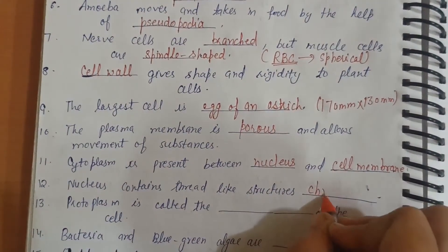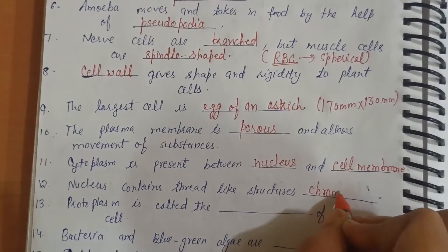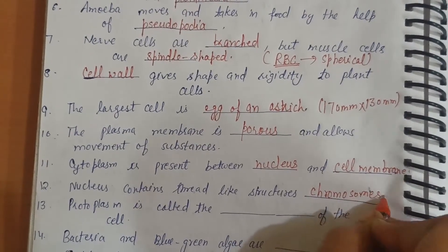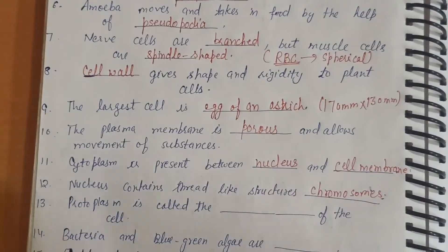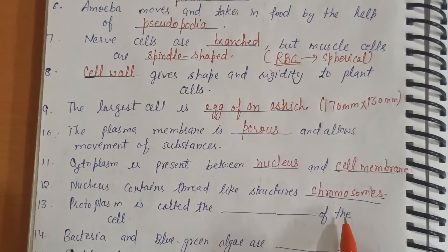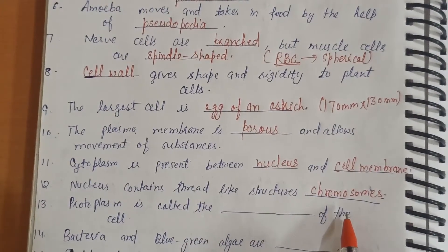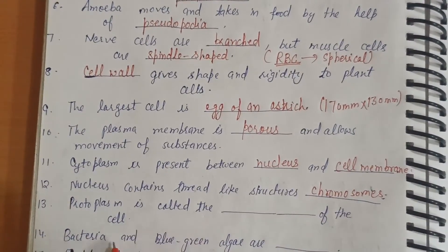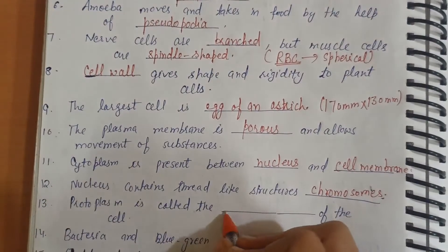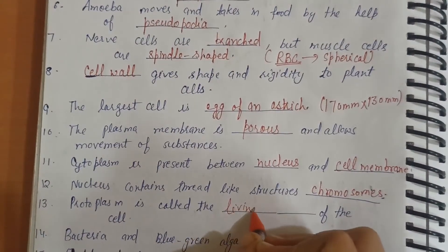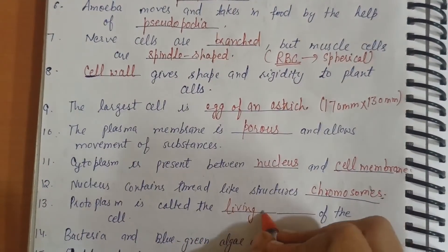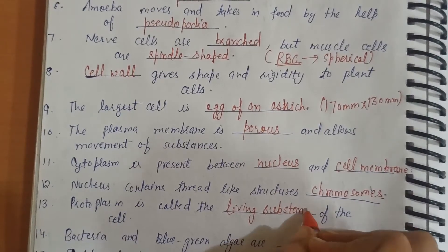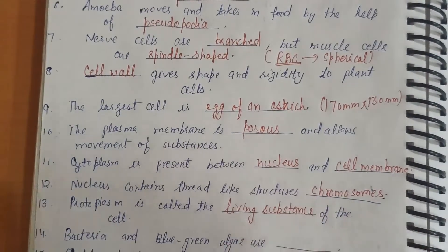The thread-like structures in the nucleus are called chromosomes. Protoplasm is called the living substance of the cell.